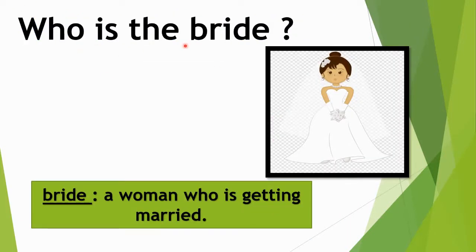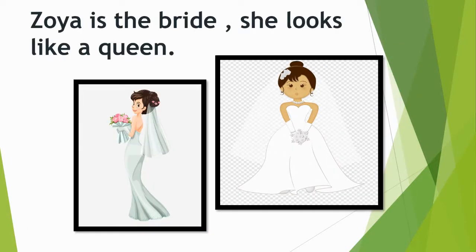Wedding bells are ringing. Now the poet is asking us, who is the bride? What is the name of the bride? Bride means a woman who is getting married. As you can see in the picture, Zoya is the bride. She looks like a queen. The poet is telling us the bride's name is Zoya, and she is looking very beautiful, like a queen.